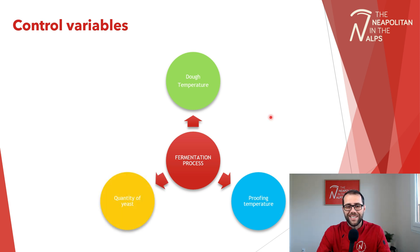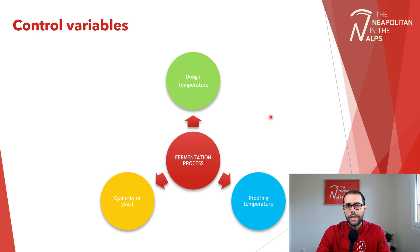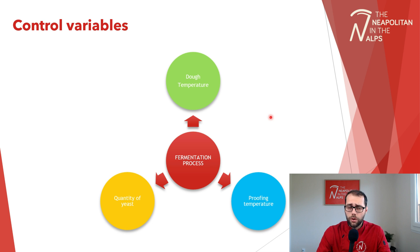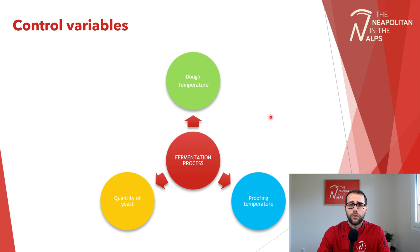Last but not least, we have the quantity of yeast. The more yeast we use in our recipe, the more important the fermentation will be. Generally, certain products that need a specific level of elasticity — like Neapolitan pizza — will not use a lot of yeast because we want to keep fermentation under control throughout the recipe. Those are the three control variables we can use to keep fermentation moving in the direction we want.